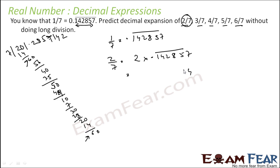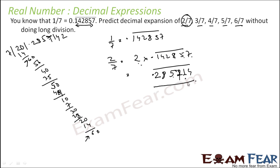Let's multiply: 7 × 2 is 14, carry 1; 5 × 2 is 10, plus carry 1 is 11, carry 1; 8 × 2 is 16, plus carry 1 is 17, carry 1; 2 × 2 is 4, plus carry 1 is 5; 4 × 2 is 8; 1 × 2 is 2. So 2 by 7 equals 0.285714 repeating. And if you see here, this is exactly the same as the direct long division result.